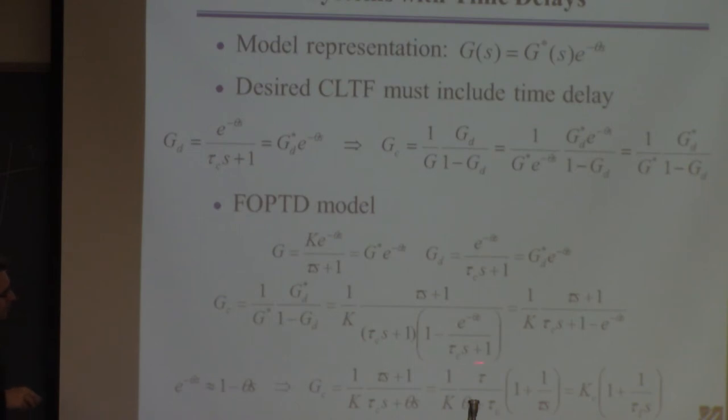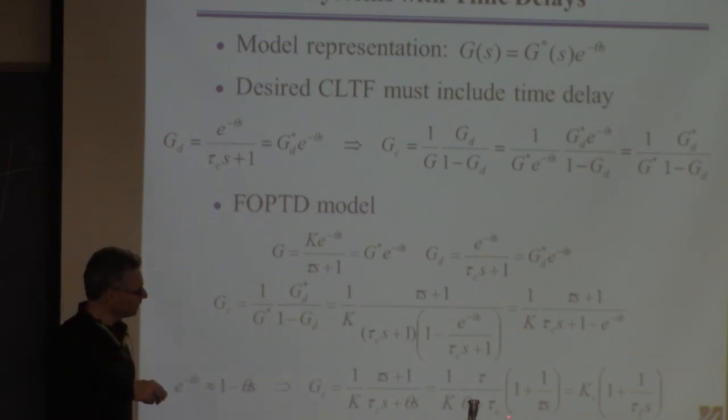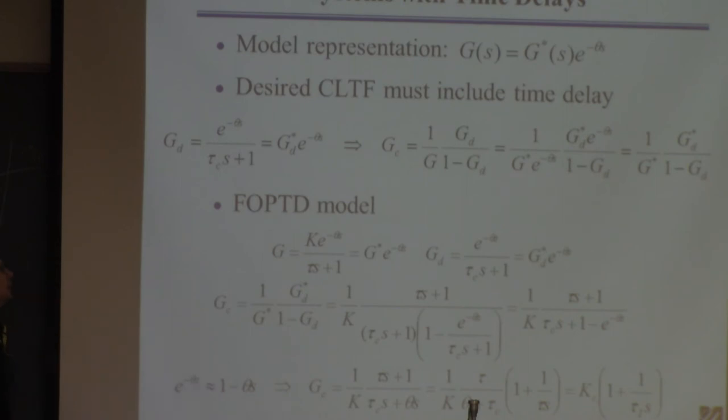If you do the rearrangement, it looks like this. The controller gain is this whole thing here. It involves the process gain, the process time delay, the process time constant, your desired closed-loop time constant. That whole thing is K_c. And then as usual, it seems, tau_I is just equal to tau of the process.